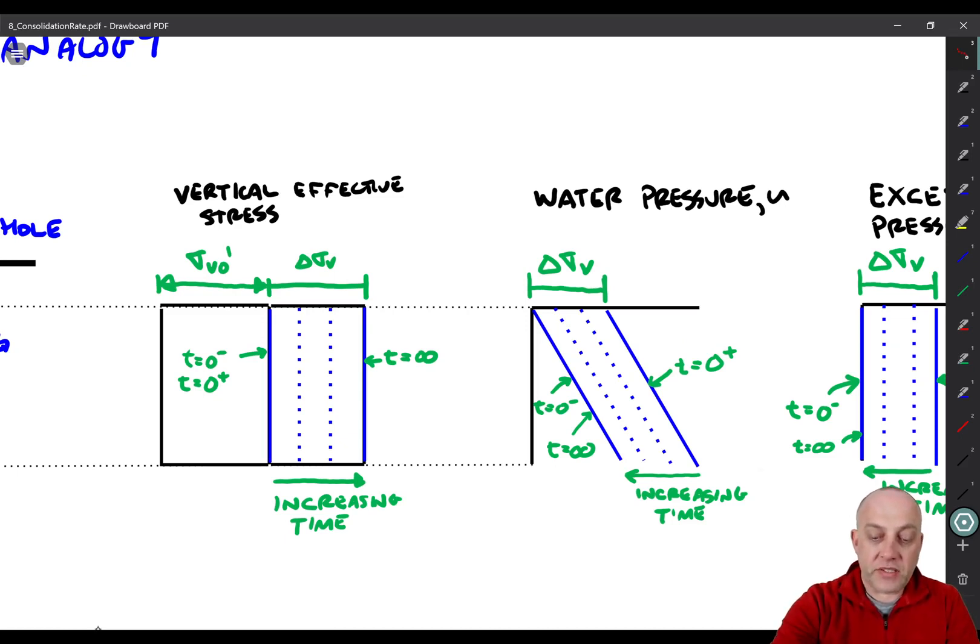So what happens is that immediately all of the pressure goes into the water, so delta sigma V is the distance between the water pressure at time equals zero minus and the water pressure at time equals zero plus.